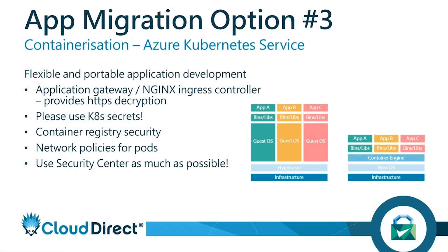The third option is containerization — we mainly use Azure Kubernetes Service for our customers. Similar concepts apply for Docker or equivalents in other providers, but we'll concentrate on Azure Kubernetes today. You can see the Application Gateway there — it's slightly different to how we deploy it for web apps and virtual machines, but a very similar concept. Within Azure Kubernetes they're known as ingress controllers, and they provide HTTPS decryption. Instead of sending traffic directly to pods running your applications inside the cluster, you send it to the ingress controller, which holds certificates and decrypts the traffic before forwarding it to your back-end applications.